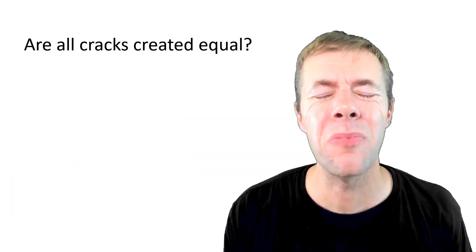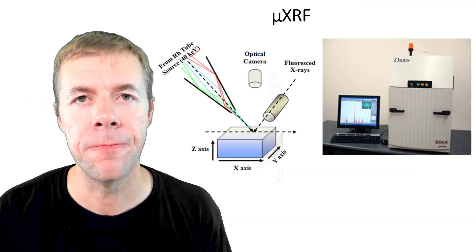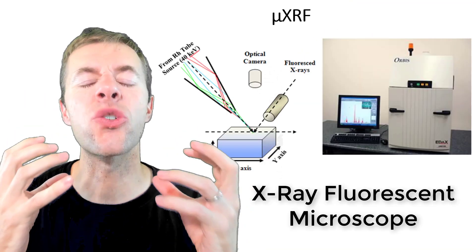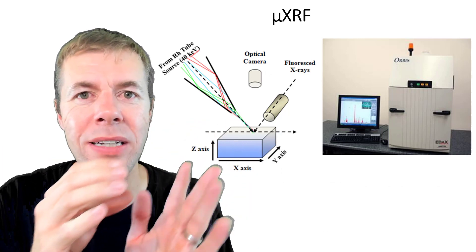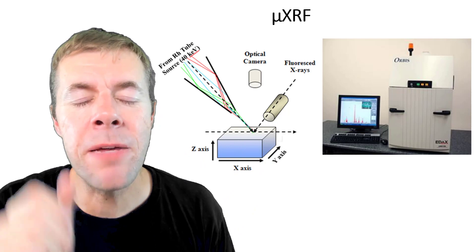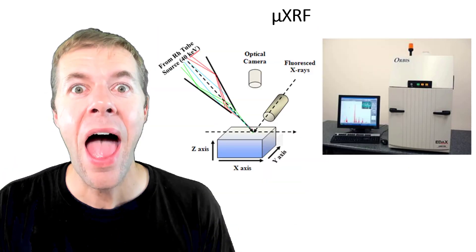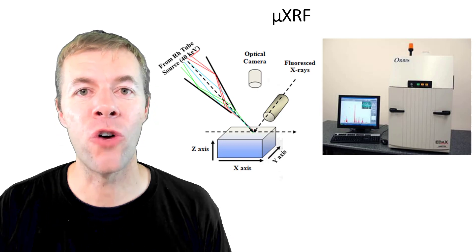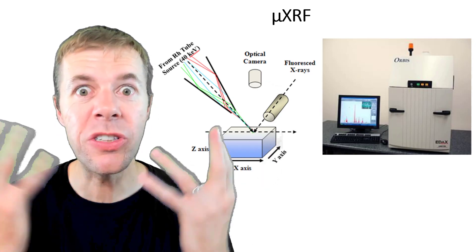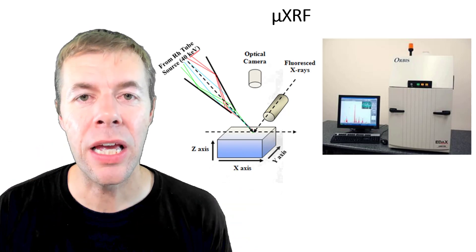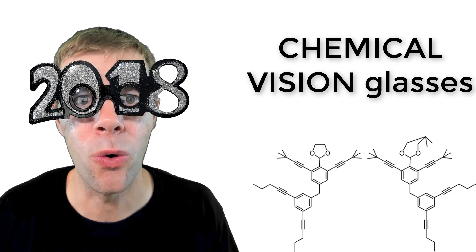Yikes! But are all cracks created equal? We're going to try to answer that question. We're going to use something called an X-ray fluorescent microscope. What it does is it focuses X-rays down to a 50 micron size, to the size of a human hair. And then it maps the surface of the concrete.